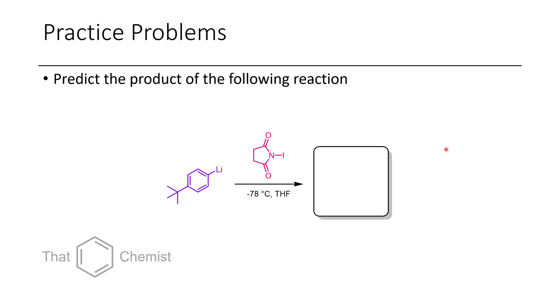Additionally, in this problem, I'd like you to identify what the product of this reaction would be. If you've been following through the lectures so far, you'd know what purpose this reagent N-iodosuccinimide would serve as. The question is, what kind of product would we get here?